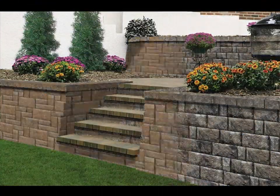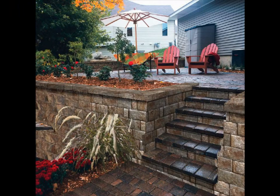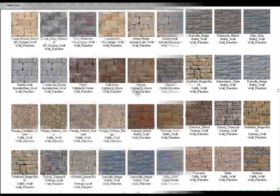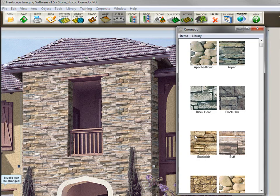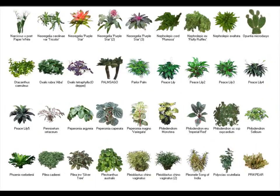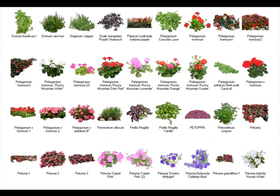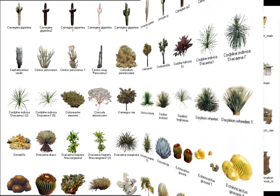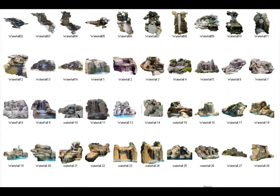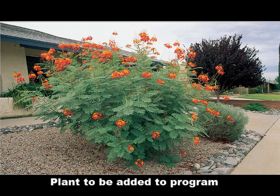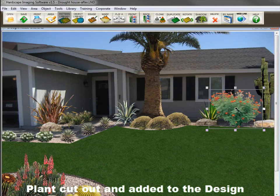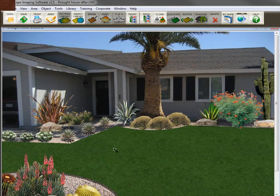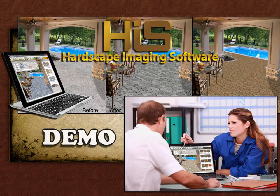The program can also depict wall stones for retaining walls and garden walls, and comes with hundreds of colors of wall stones. It can also do stone veneer products like Coronado, Cultured Stone, and Eldorado Stone. The program also comes with an extensive plant library from across the country with hundreds of trees, shrubs, perennials, palm trees, and desert plants, along with other hardscape items like rocks, waterfalls, and outdoor furniture. You can even add your own plants and hardscape items from images you have taken of your own projects. Now I'd like to take a couple minutes to show you just how quick and easy Hardscape Imaging Software is to use.